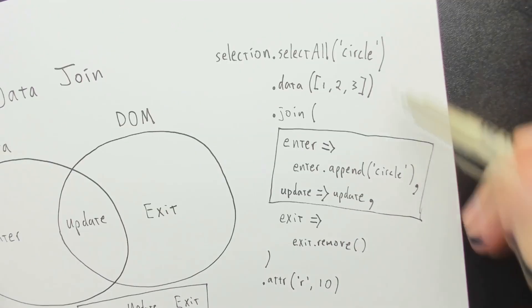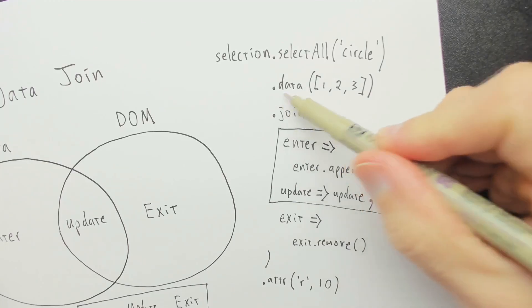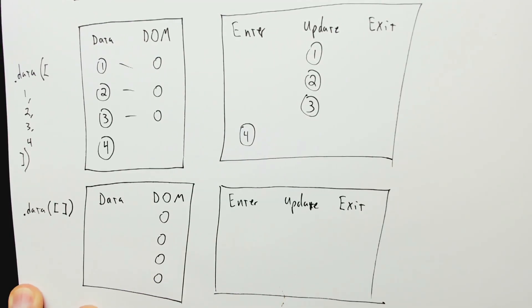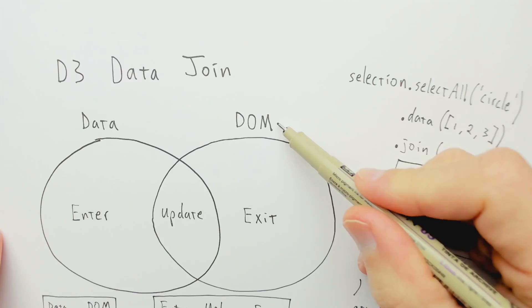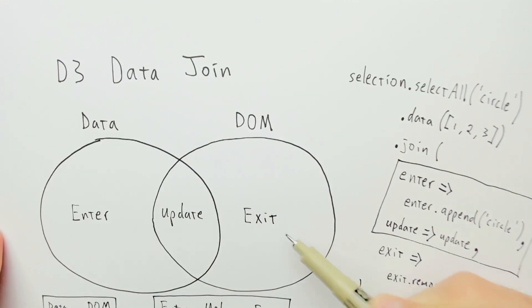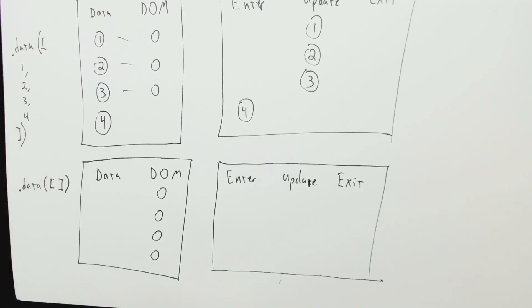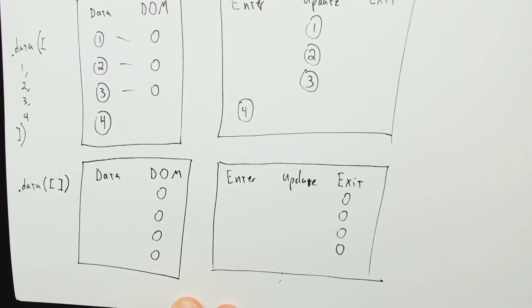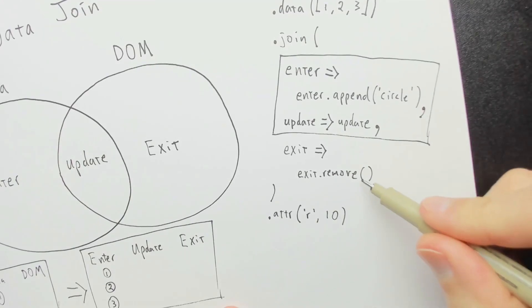Now let's consider the case that this code runs, but instead of passing data 1, 2, 3, we pass data of empty array. In this case, there are four existing circles, but no data elements. What will we have here for enter, update, and exit? We're only looking at the case where there are DOM elements, but no data elements. So the DOM elements exist, but the data elements don't. That triggers the exit case. So we're just going to end up with four circles in the exit selection, and those circles will be removed.